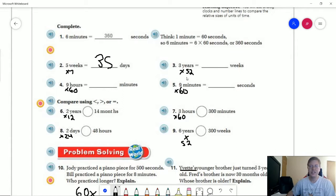For number three, we're going to take three years, multiplying by 52 weeks in a year. That will give us 156. For number four, we're multiplying our number of hours by the number of minutes in an hour, which would be 60. That's going to give us 540 minutes.